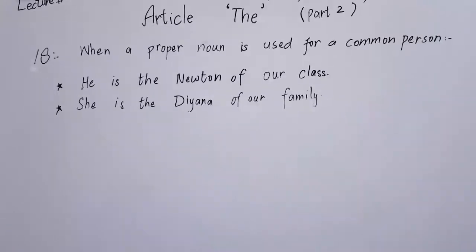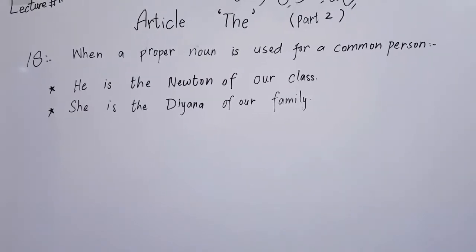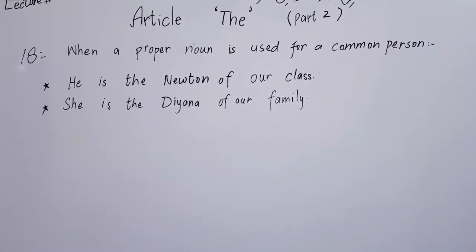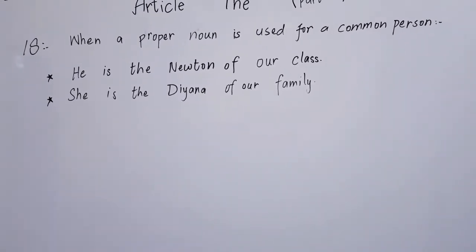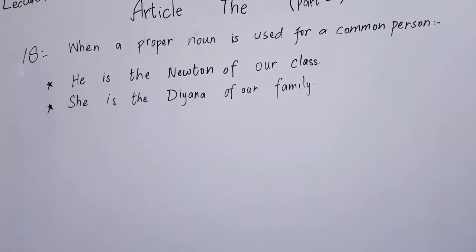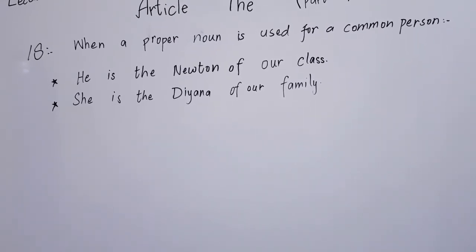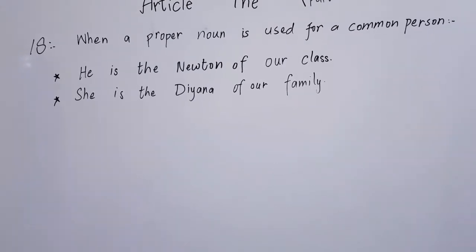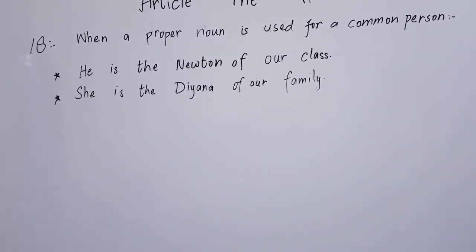Rule number 18 — the last rule for the article 'the': when a proper noun is used to describe a common person. For example: 'He is the Newton of our class.' 'She is the Diana of our family.'